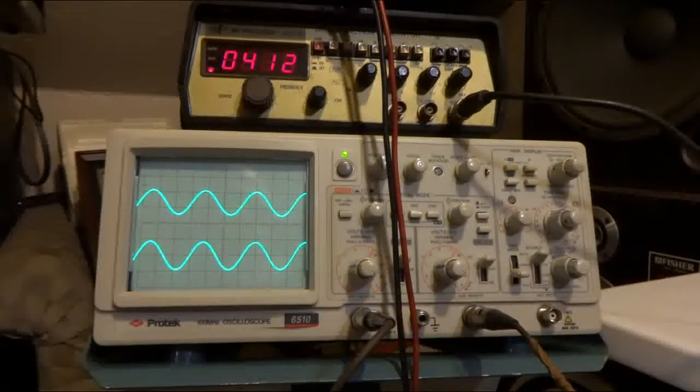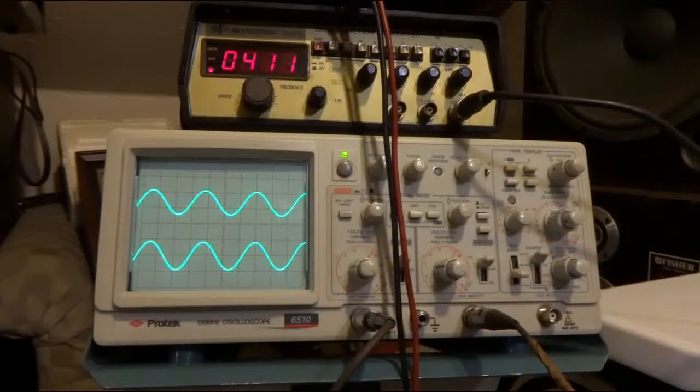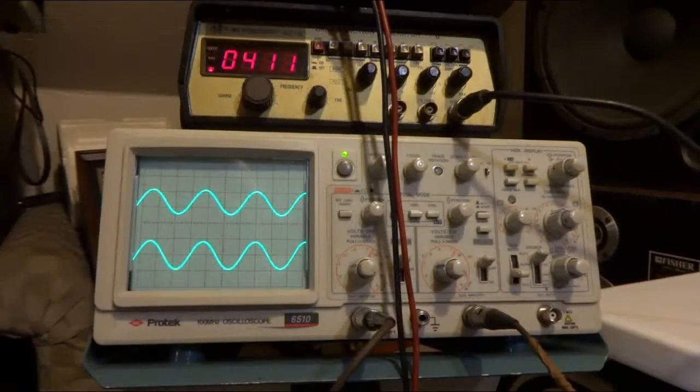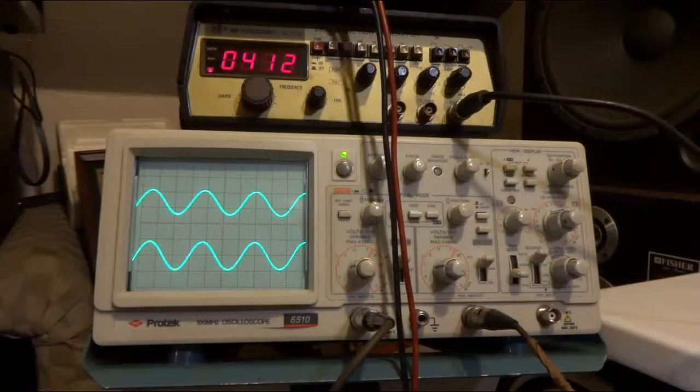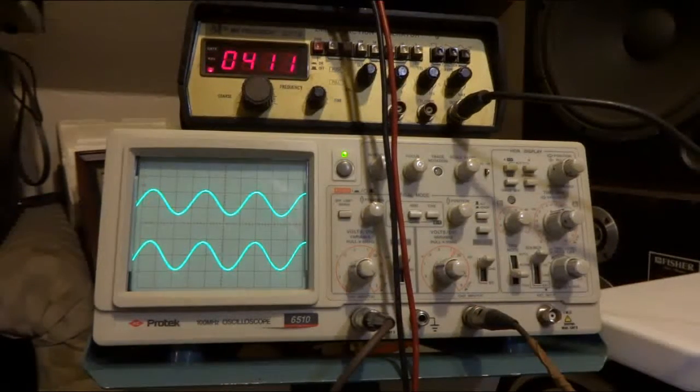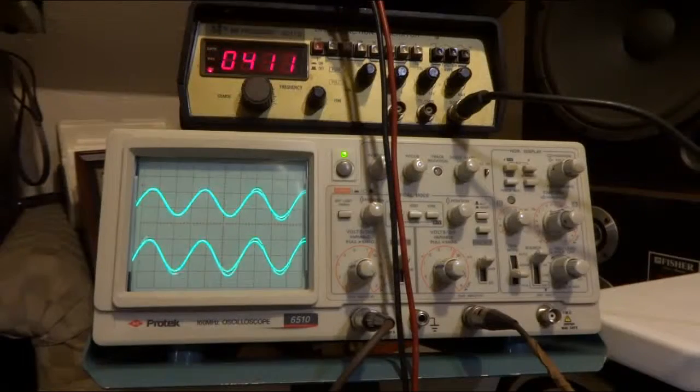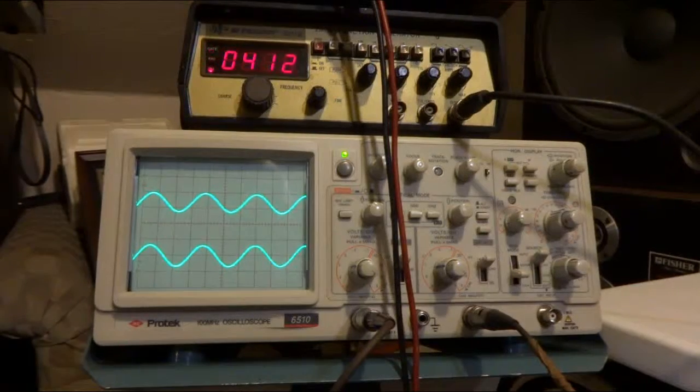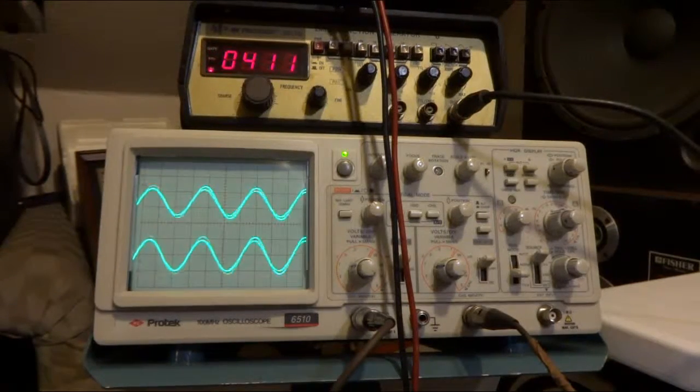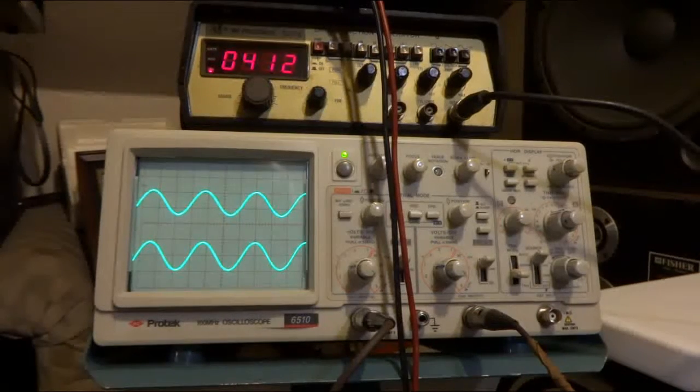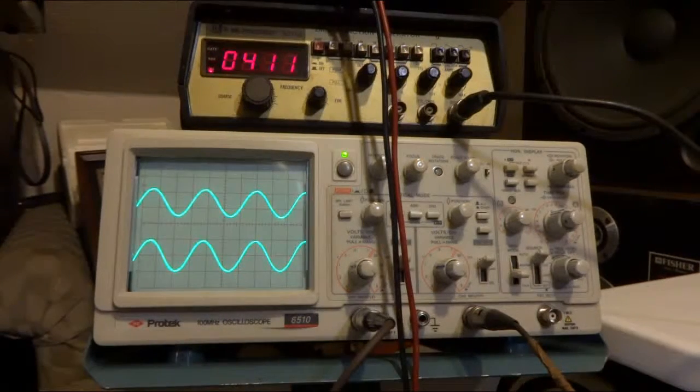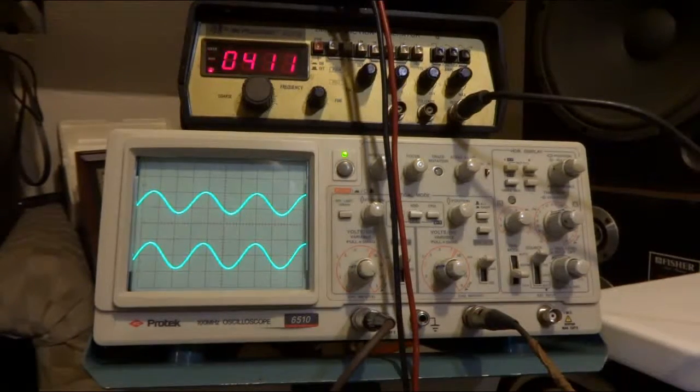Now the low mid-range runs from about 250 to 500 Hertz. I got my meter set at right around 400, 411. The bass has a low effect here. Bass all the way down, bass all the way up. This is the treble all the way up, treble all the way down, not too much effect.